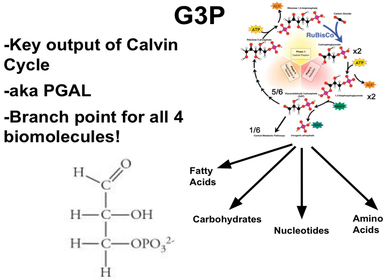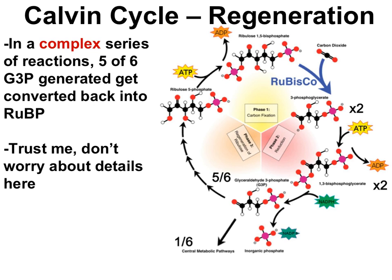G3P is a big deal. Another name for G3P is phosphoglyceraldehyde, or PGAL — you can call this product either G3P or PGAL, whichever you prefer. G3P is the key output of photosynthesis. G3P can be the carbon backbone for almost any type of macromolecule: it can be used as a starting point for lipids, sugars like glucose, nucleotides, or amino acids used to make proteins.